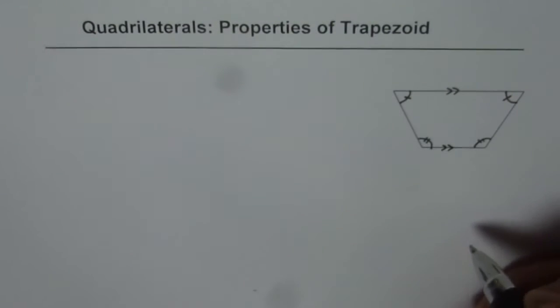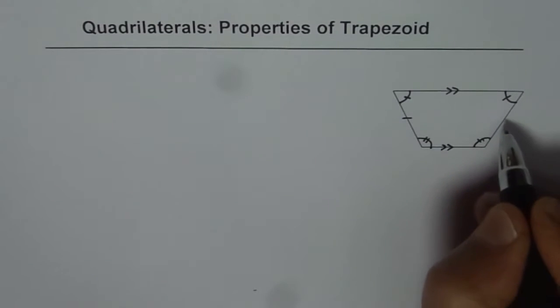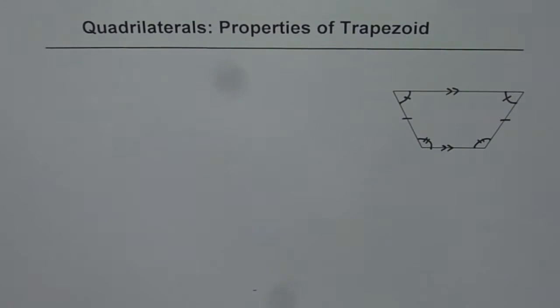So it has two pairs of equal angles. Now does it have equal sides? No, but it has one pair of equal sides. So that is what a trapezoid is.